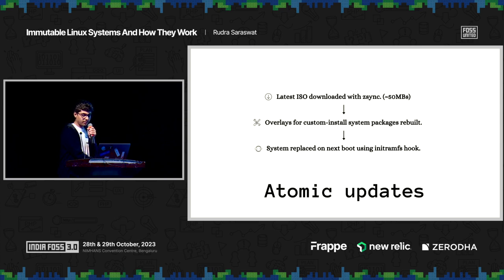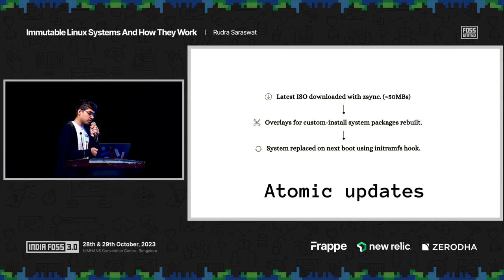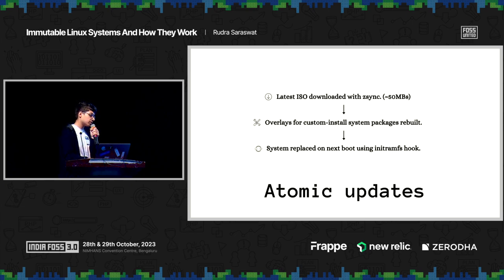We then regenerate any overlays using any of the packages you may have installed previously. On the next boot, we replace your current root file system with the new one using an initramfs hook. An initramfs hook is a shell script which is run before any of the root partitions or other partitions are mounted — it runs once the initramfs is loaded. We swap out the user directory with the new one. This takes a total of zero seconds because it is a simple rename operation. This is how we implement atomic updates in BlendOS using Akshara.